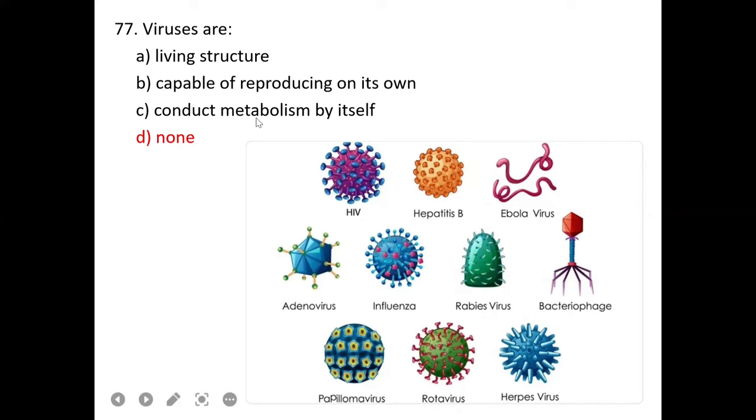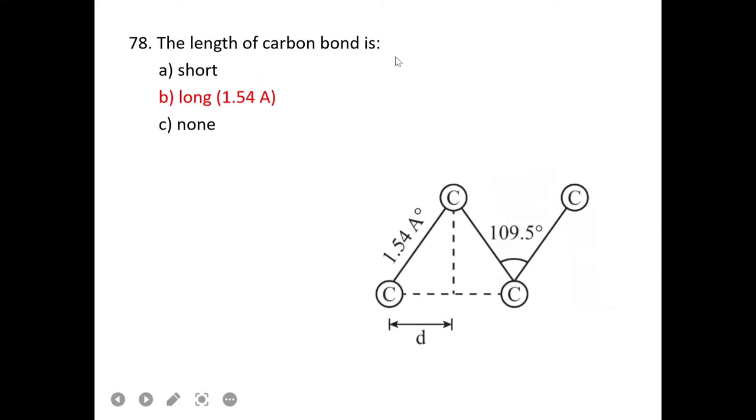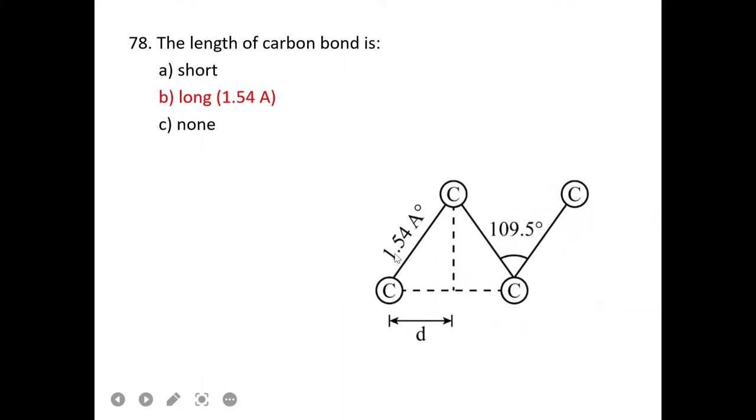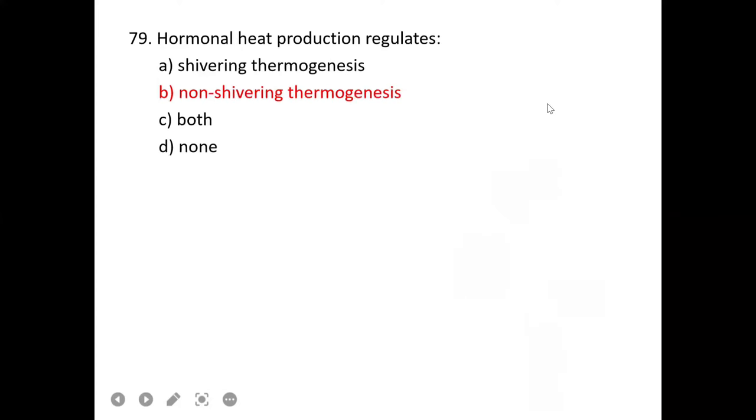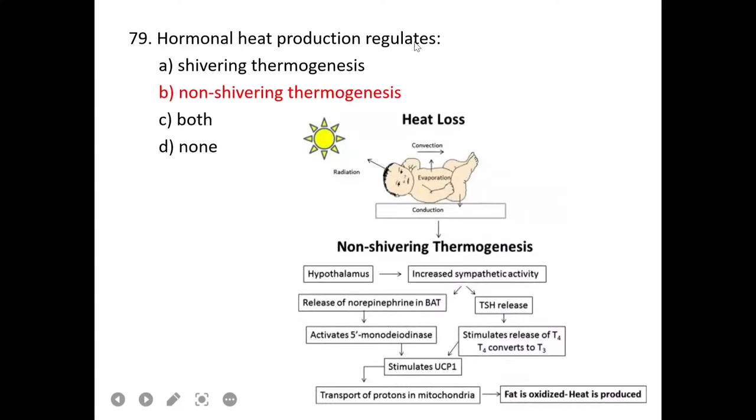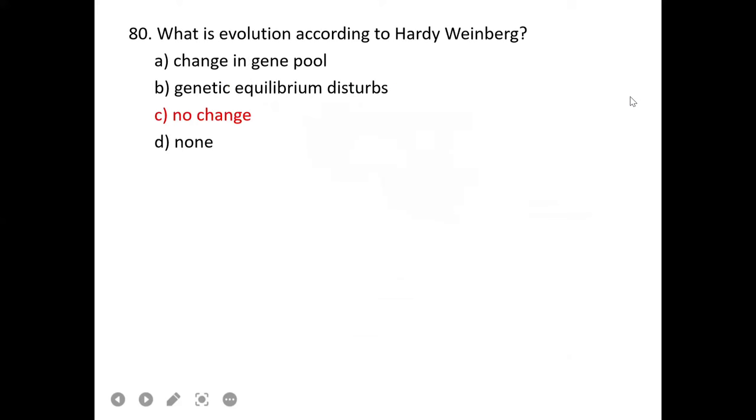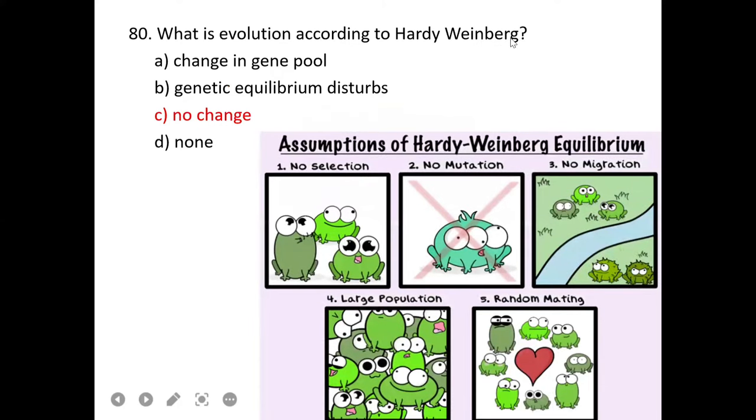The length of carbon-carbon bond is 1.54 angstrom. B is correct. Hormonal heat regulates non-shivering thermogenesis. What is evolution according to Hardy-Weinberg? According to Hardy-Weinberg, there is no change when the factors are constant. When there is no disturbance in factors, there is no change. C is correct.